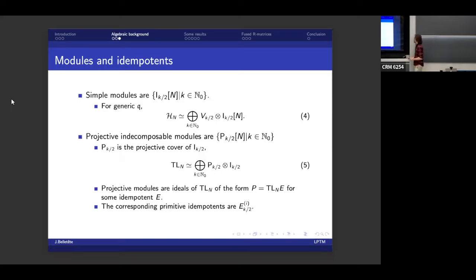The simple modules of Temperley-Lieb are very simple. They're indexed by a single integer, k. So I'm labeling them i_{k/2,n}. And for generic q, the entire Hilbert space, my V_{1/2} tensor with itself n times, it decomposes like this. V_{k/2}, that's the U_q SL_2 module of spin k/2, tensored by my irreducible i_{k/2}. So morally speaking, what the simple module is, is the space of permutations of the different copies of V_{k/2} that exist in the Hilbert space.